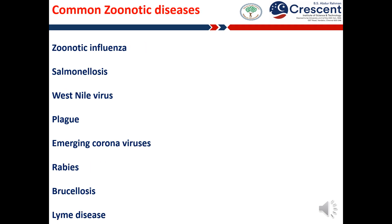The zoonotic diseases of most common concern include zoonotic influenza. Humans can be infected with avian, swine and other zoonotic influenza viruses such as avian influenza virus subtypes H5N1, H7N9, H9N2, and H3N2. Salmonellosis is a symptomatic infection caused by bacteria of the Salmonella type. The most common symptoms are diarrhea, fever, abdominal cramps and vomiting. Symptoms typically occur between 12 and 36 hours after exposure and last from 2 to 7 days.